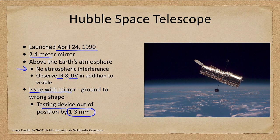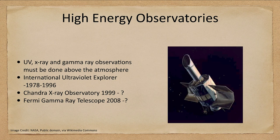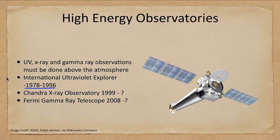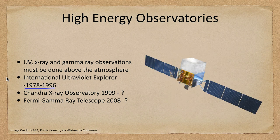We can also look at high-energy light using space observatories. These include the International Ultraviolet Explorer, which operated for nearly two decades studying the universe in ultraviolet, the Chandra X-ray Observatory, and the Fermi Gamma Ray Telescope — all allowing us to observe the universe across other parts of the electromagnetic spectrum, including X-rays and gamma rays.